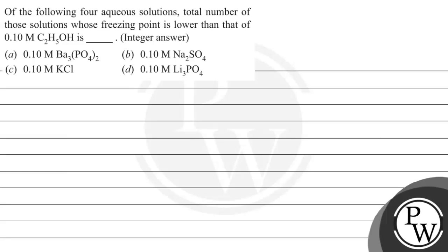Hello, let's read this question: of the following four aqueous solutions, total number of those solutions whose freezing point is lower than that of 0.1 molar C2H5OH is dash — integer answer — and we have been provided these four values for the different compounds given here.